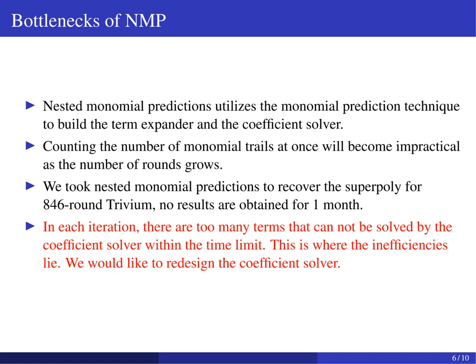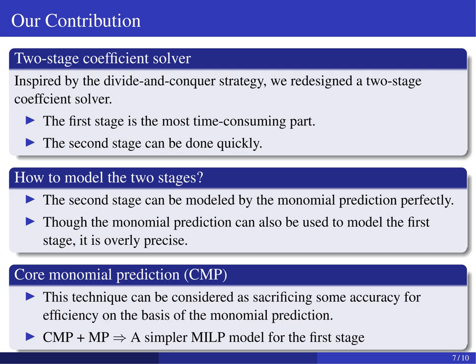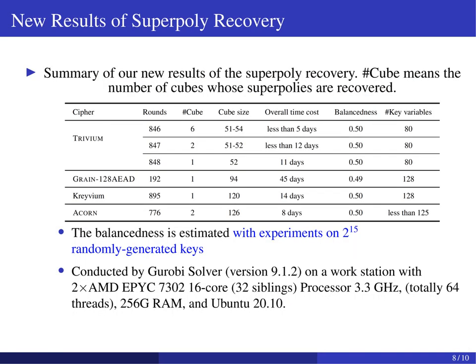We experimentally found that the efficiency of the whole framework is mainly determined by the efficiency of the coefficient solver. NMP chooses the monomial prediction as its coefficient solver, but counting the number of monomial trails at once will become impractical as the number of rounds grows. Therefore, we redesigned a two-stage coefficient solver. While the first stage is considered the most time-consuming part, the remaining problem is how to model the two stages. Though the monomial prediction can also be used to characterize the first stage, further analysis shows that it has a problem of over-precision. This inspires us to sacrifice some accuracy for efficiency, leading to a new technique called core monomial prediction (CMP). By combining CMP with MP, we can derive a simpler MLP model for the first stage. This new MLP model greatly speeds up the superpoly recovery.